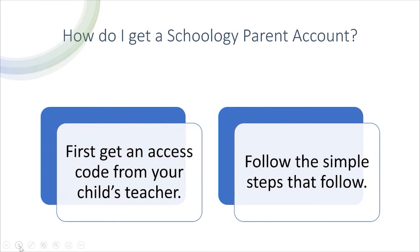There is going to be an access code for each of your children. For elementary students, your child's teacher will be sending that access code home. For secondary students, you can email one of their teachers. You don't have to email all their teachers because the access code is attached to the student, not the teacher. Once you get your children's access codes, you will be able to sign up for a parent account, and you'll be able to set it up to get notifications if your child has something overdue.